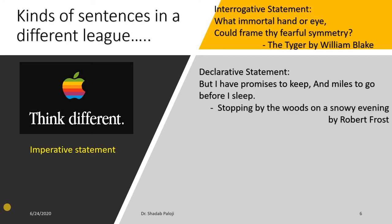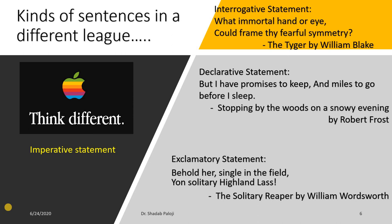Then Robert Frost — a declarative statement: 'But I have promises to keep, and miles to go before I sleep.' This is a very beautiful poem that talks about how the poet is thinking about the future and his commitment to various people and work in his life — very motivating poetry. Throughout the poem you will find the statements are more of a declarative kind; he is declaring something.